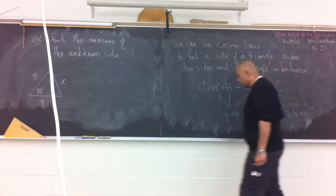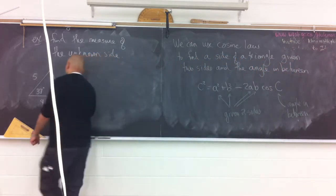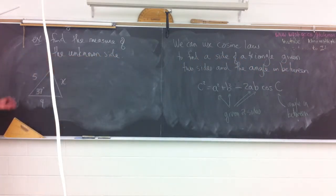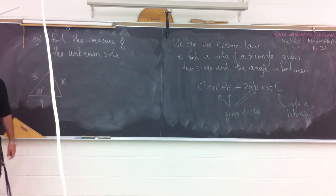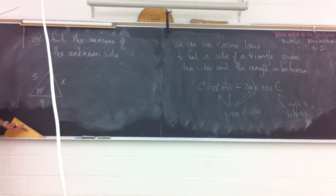So, in your formula here, this is the side you're looking for, C. A and B are the sides that you have. And C is the angle in between. I'm just going to make a little note of that. Here, this is the angle in between. And the A and the B are the known, or the given two sides.